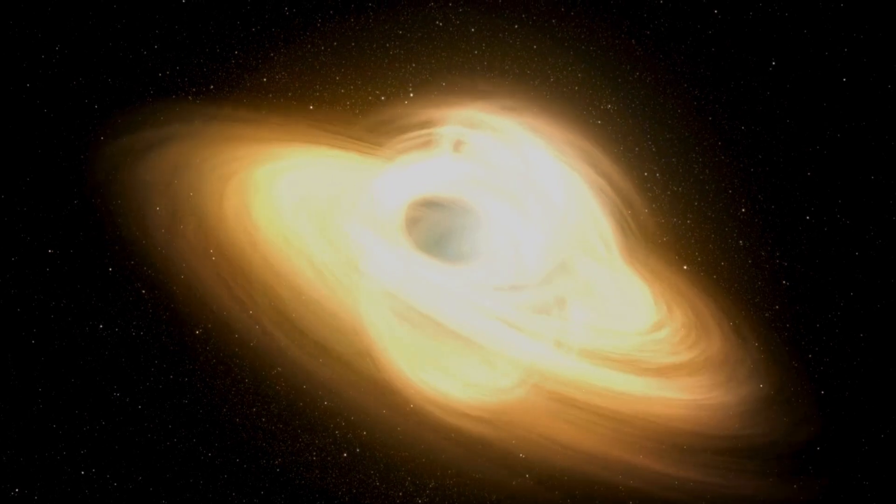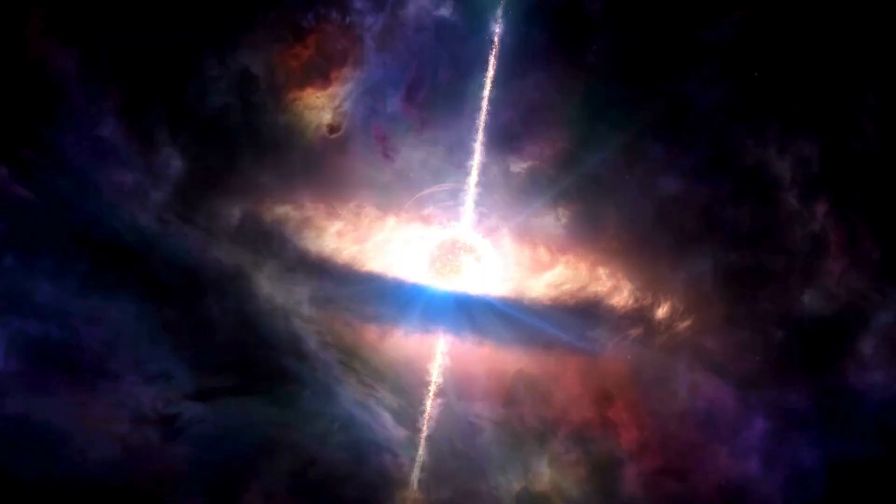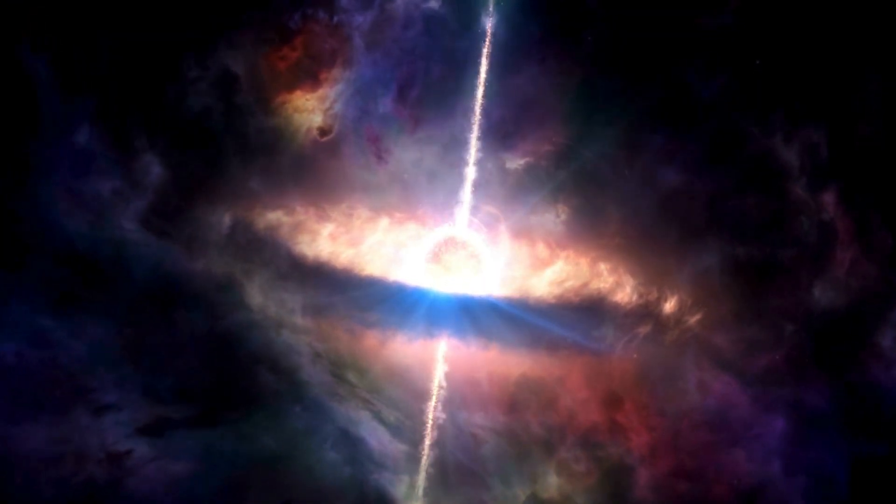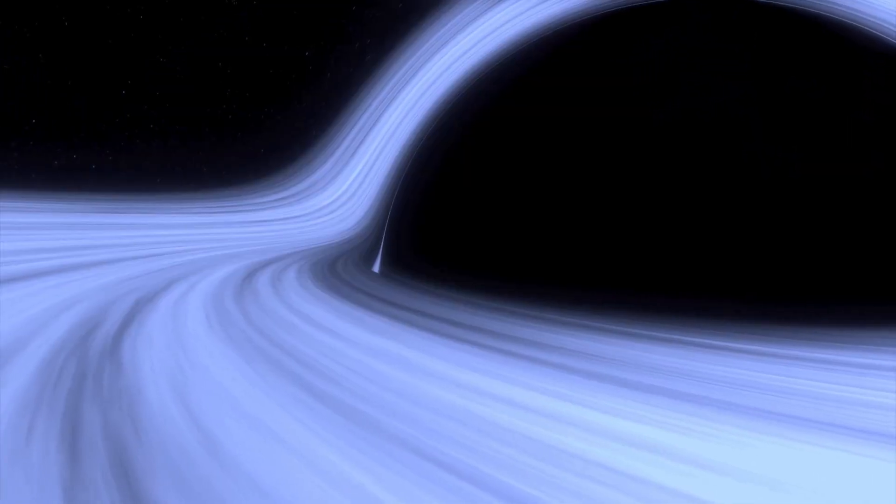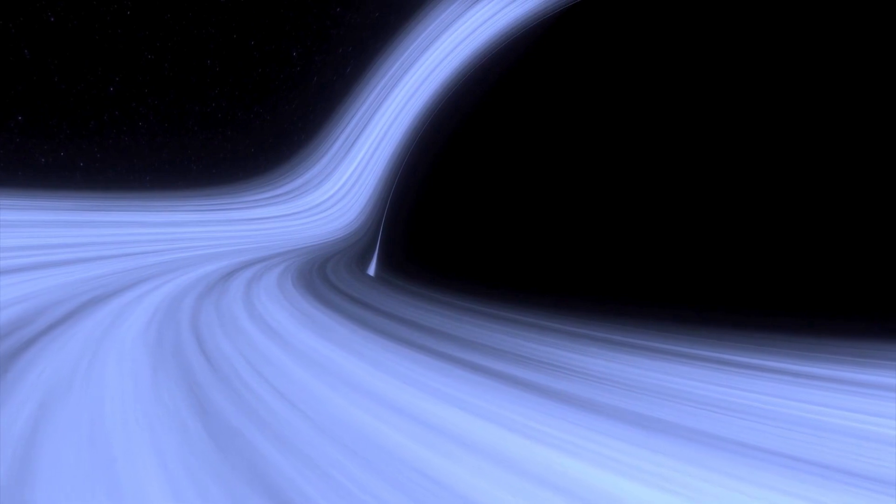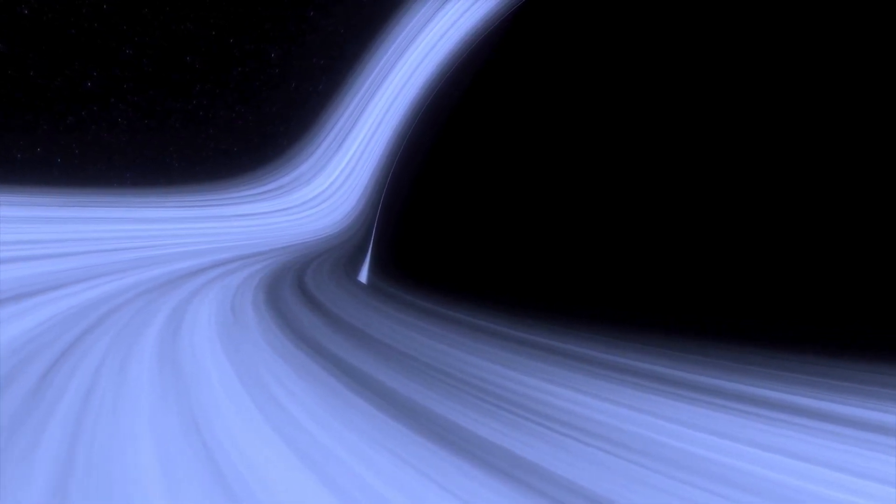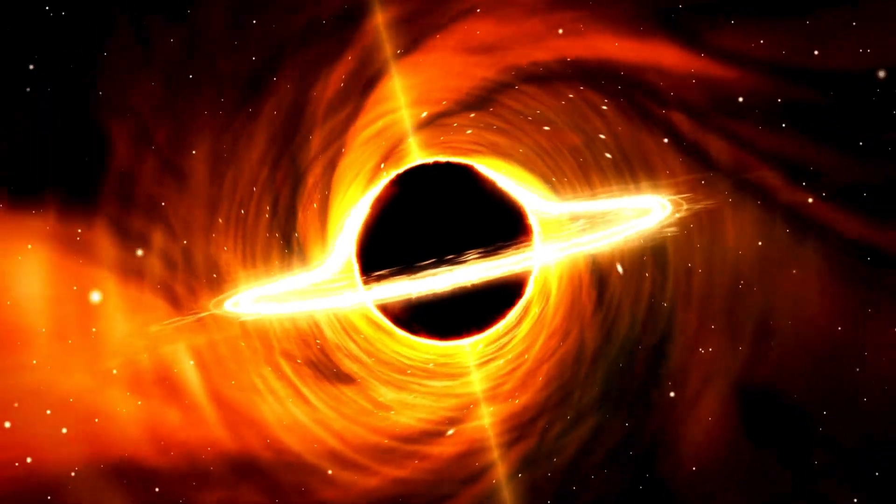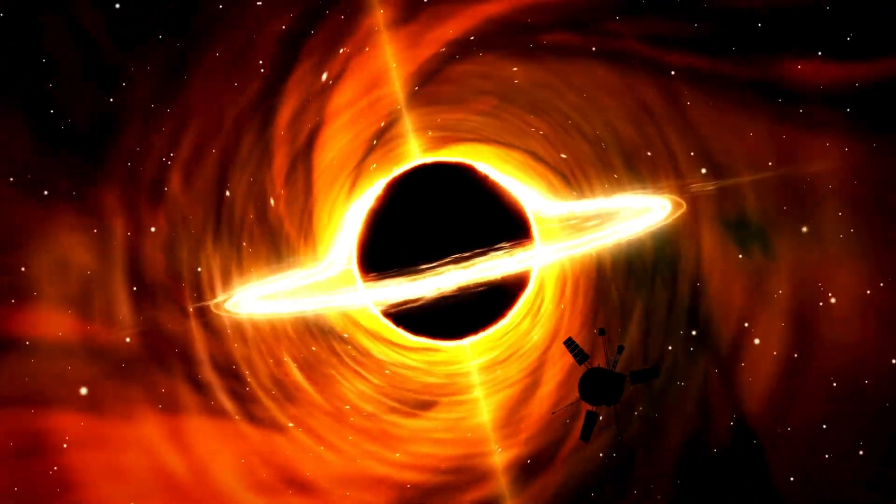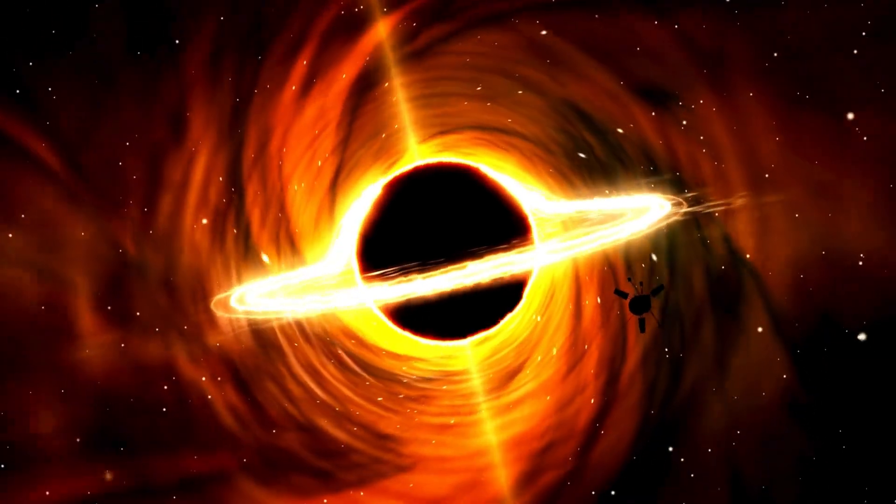Detecting black holes is no easy task since they don't emit any light. However, scientists have found ways to infer their presence by observing their effects on nearby matter. For example, if a black hole passes through a cloud of interstellar matter, it'll pull that matter towards it in a process called accretion. Additionally, when a normal star gets too close to a black hole, it can get torn apart, emitting x-rays as it does so.